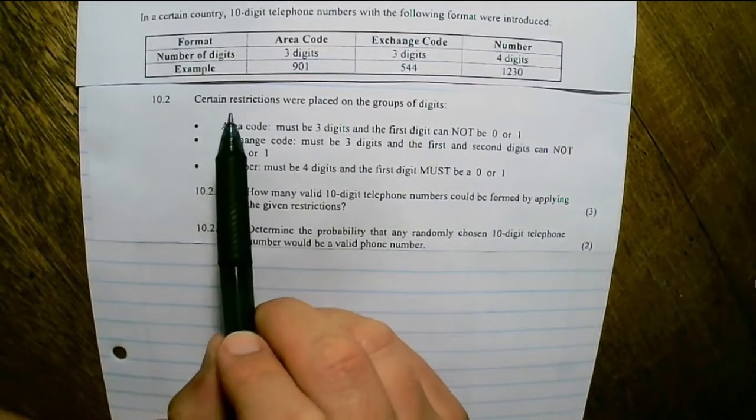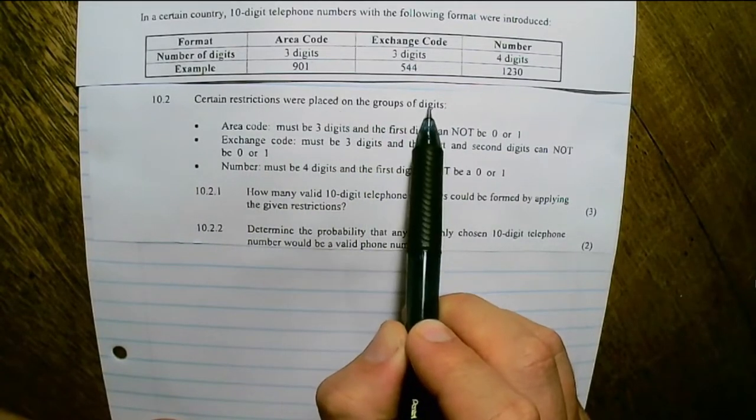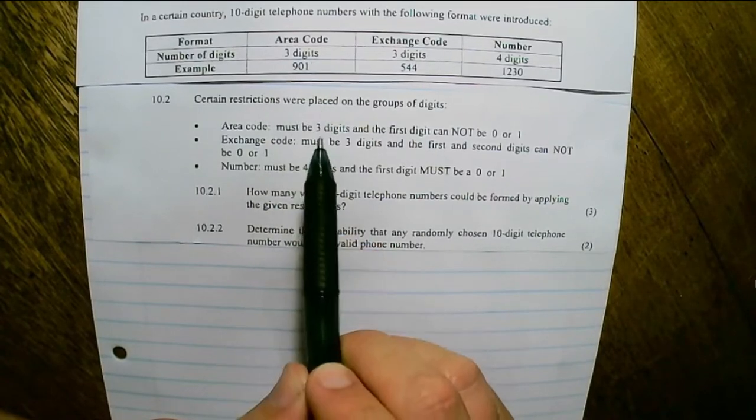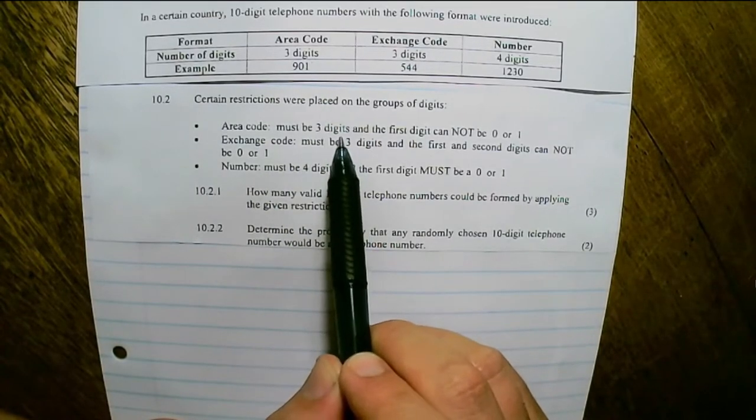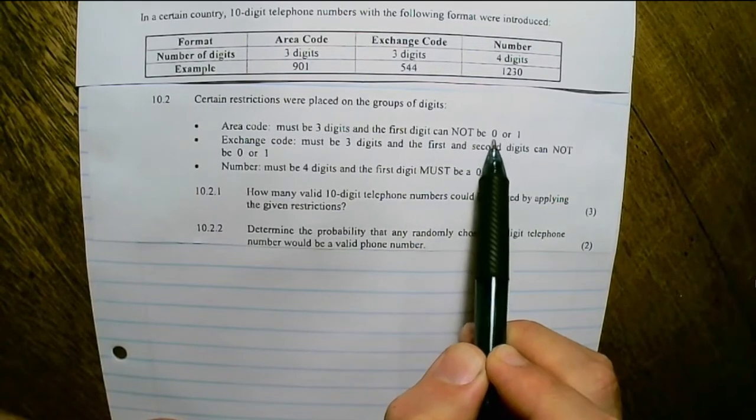Next, certain restrictions were placed on the groups of digits. The area code must be 3 digits and the first digit cannot be 0 or 1.